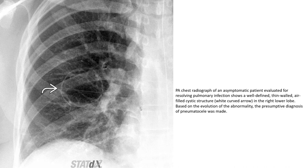The thin-walled cystic structure with a well-defined thin-walled air-filled cystic appearance is seen in the right lower lobe. Based on the evolution of the abnormality, the presumptive diagnosis of pneumatocele was made.